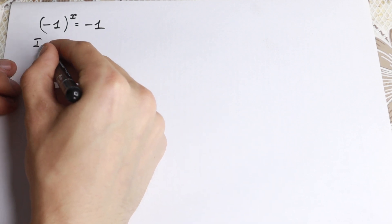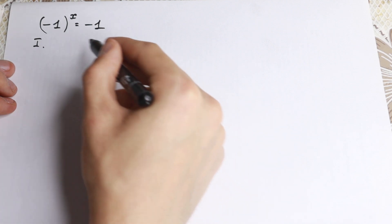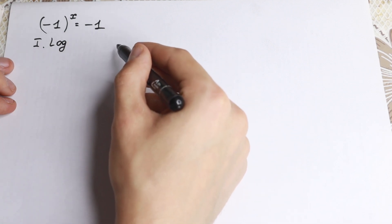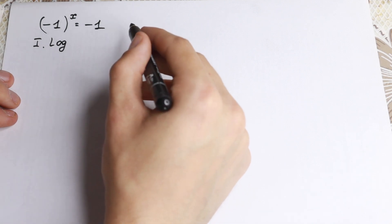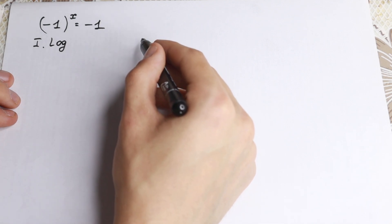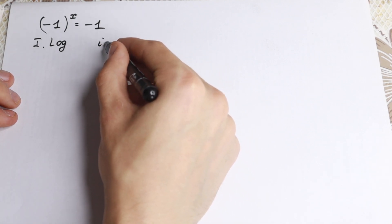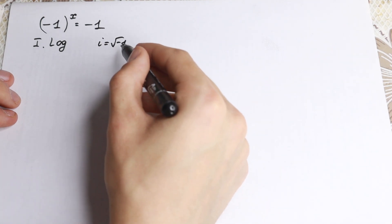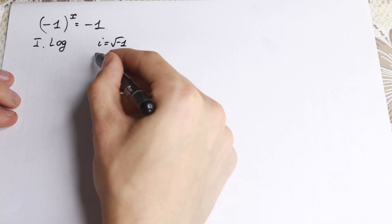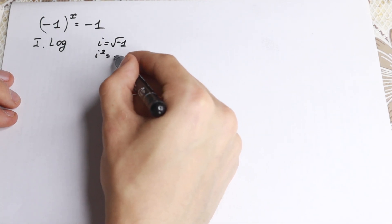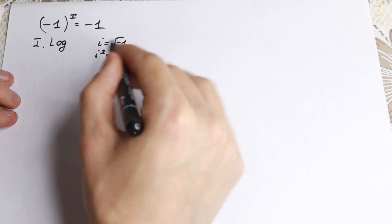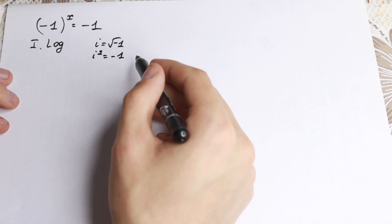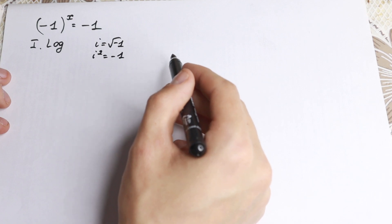I want to show you the first really interesting method, including logarithm. If you know a little bit about log, we need to know two things. First, i equals the square root of minus one. Second, i squared equals minus one. We need to know these two things before we start.